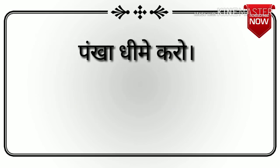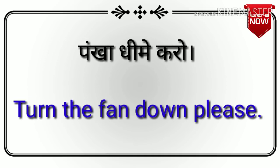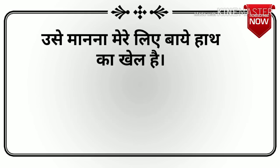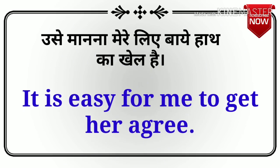Next sentence: पंखा धीमे करो, मतलब पंखा स्लो करो. तो इसे हम बोलेंगे — Turn the fan down. या फिर politely बोलना हो तो — Turn the fan down, please. Next sentence: उसे मनाना मेरे लिए बाएं हाथ का खेल है. — It is easy for me to get her to agree.